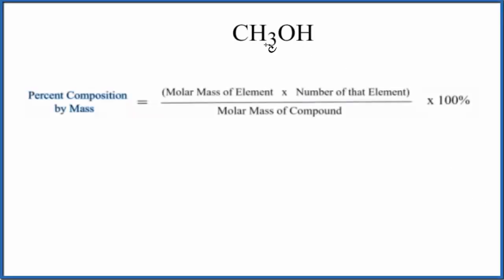In this video we'll find the percent composition by mass for each element in CH3OH, this is methanol. We have a formula here that'll help us and the first thing we need to do is find the molar mass for the compound.